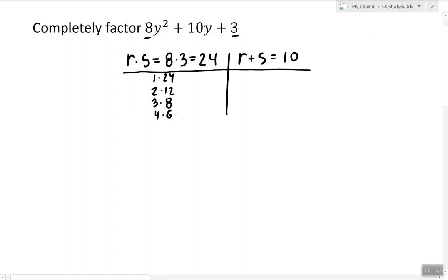And of these pairs we need to find the values whose sum is equal to 10. It's not this one, not this one, not this one, it's this one.